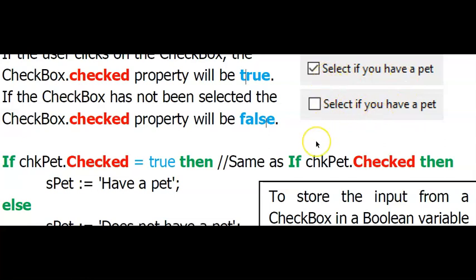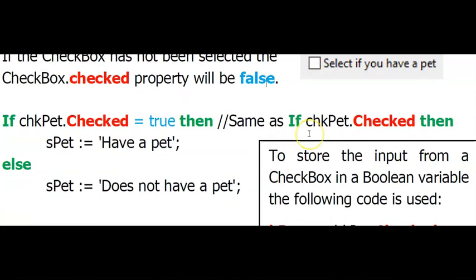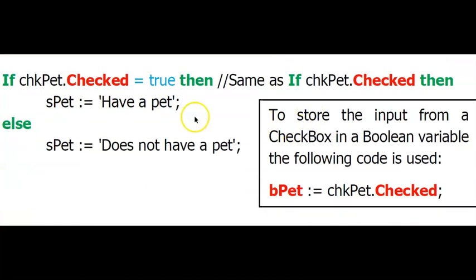And you're going to select it if you have a pet. And the user will not select it if they don't have a pet. So that .checked property would have either value of true or false.